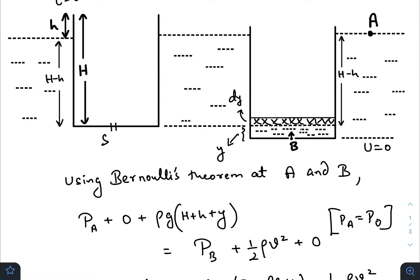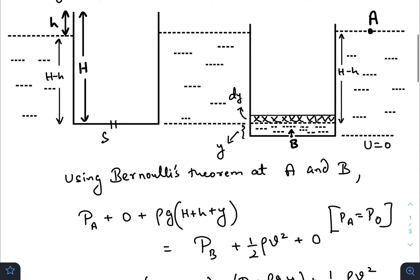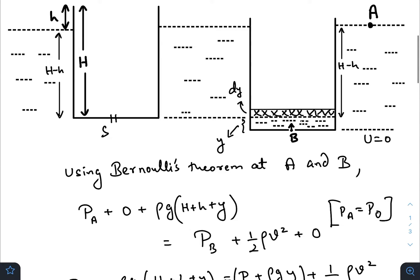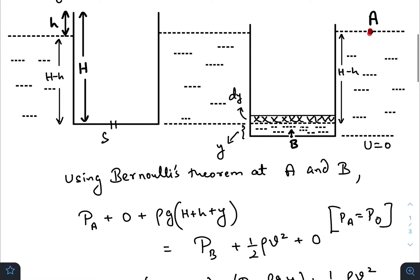I have drawn the situation at any instant — when a height y of water has already entered inside the container. That means the height that was previously outside the water has also decreased by an amount y. Now I am applying Bernoulli's equation at point A and at point B.